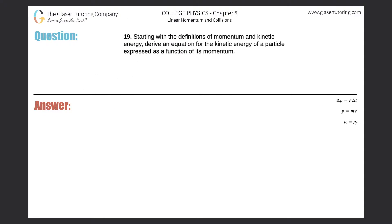Number 19. Starting with the definitions of momentum and kinetic energy, derive an equation for the kinetic energy of a particle expressed as a function of its momentum.